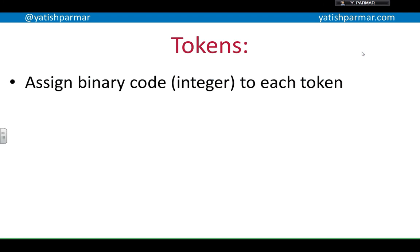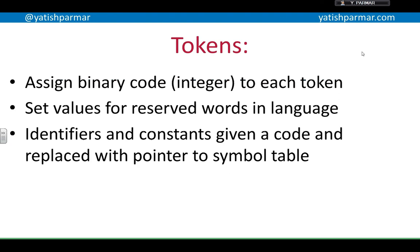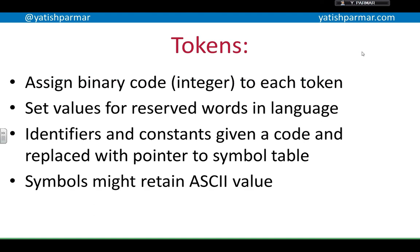With tokens, you're taking one of your lexemes and assigning a binary code to each token. These will be predefined by the standard for the programming language that you're using. There will be set values for reserved words in a language, and identifiers and constants are given a code and replaced with a pointer to a symbol table. Any other symbols — for example parentheses, squiggly brackets, round brackets, square brackets, multiplication symbol, addition symbol — they retain their ASCII value.